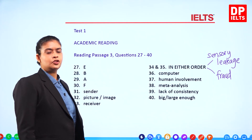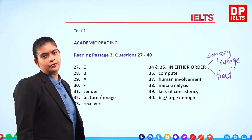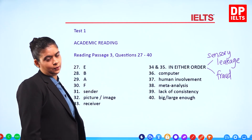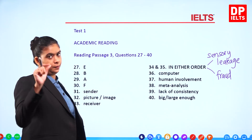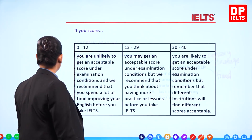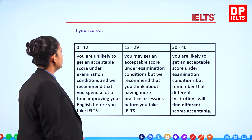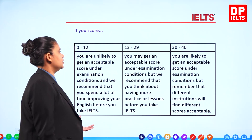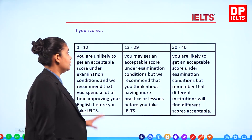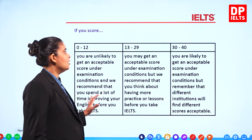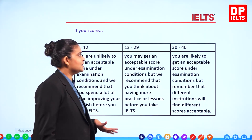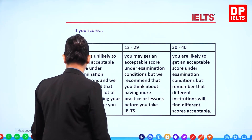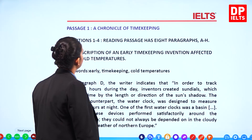Make sure you've given your score out of 40 and check what band score that is equivalent to. If you've got 0 to 12, that's not okay. 13 to 29, okay. 30 and above — definitely you're good.